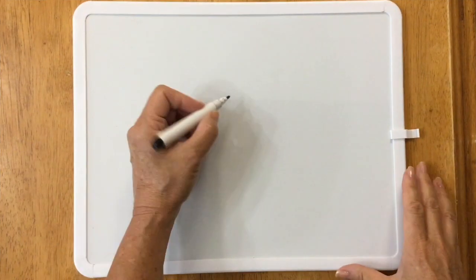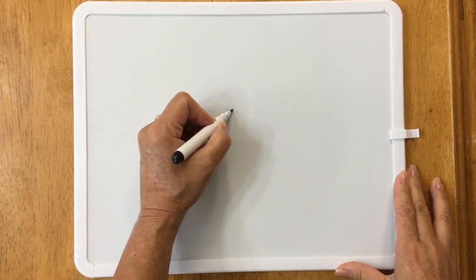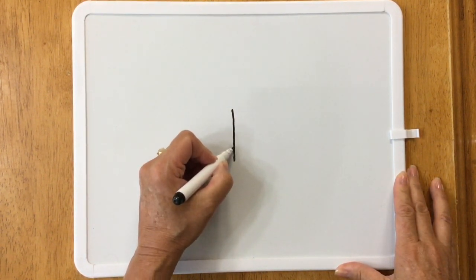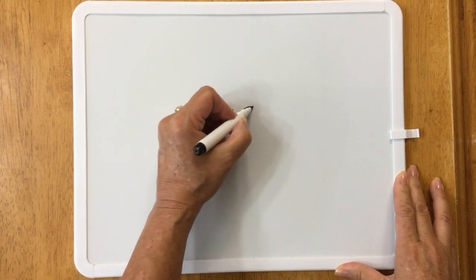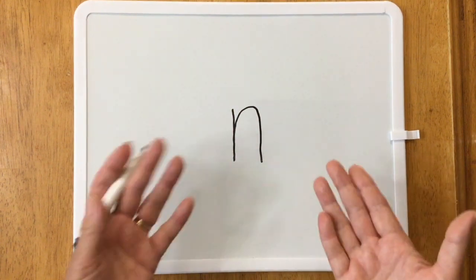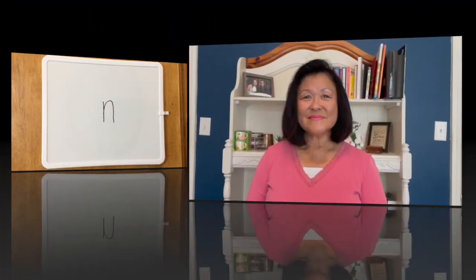Now let's draw another one. You start in the middle, draw a straight line down. Then go up and down and now you're done. Fantastic!